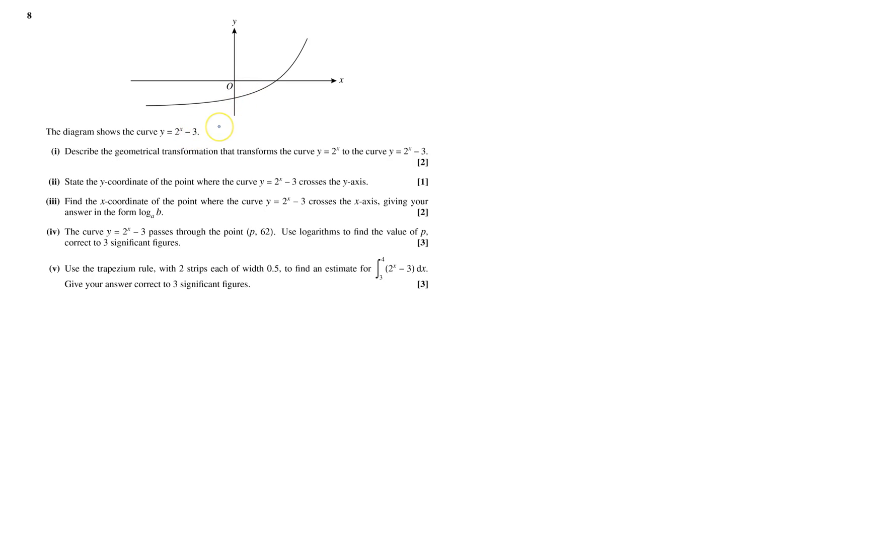Okay, so you've got the curve 2 to the power of x minus 3. Describe the geometrical transformation as part 1. Transformation of y equals 2 to the x to this, which is outside the function. This one's dead easy. So that is a translation